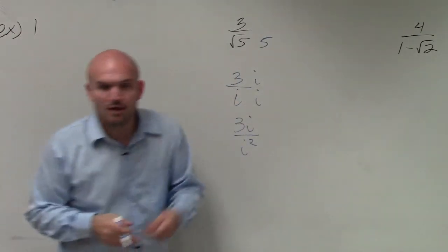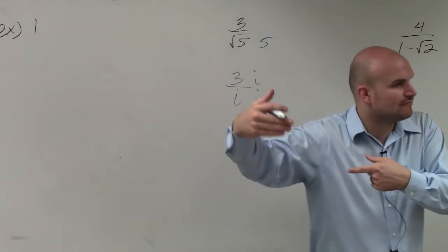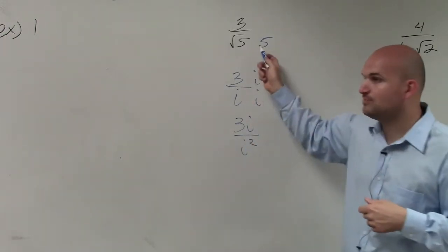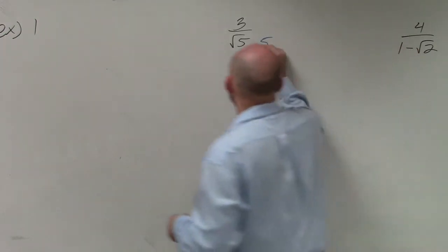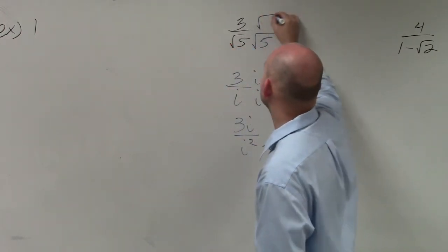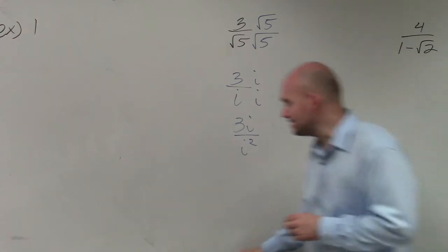Now here comes the problem, though. We can't multiply a number outside of a radical to inside the radical, right? The only way I can multiply 5 times 5 is if I make this the square root of 5. And whatever I multiply in the numerator, I also have to multiply by the denominator.